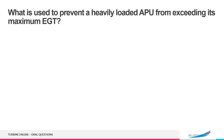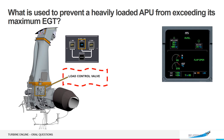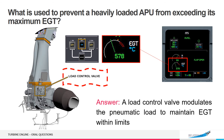What is used to prevent a heavily loaded APU from exceeding its maximum EGT? A load control valve modulates the pneumatic load to maintain EGT within limits.